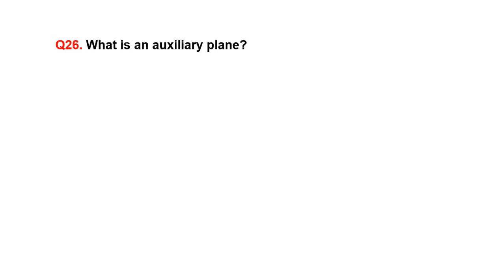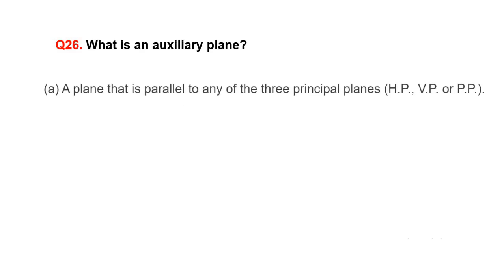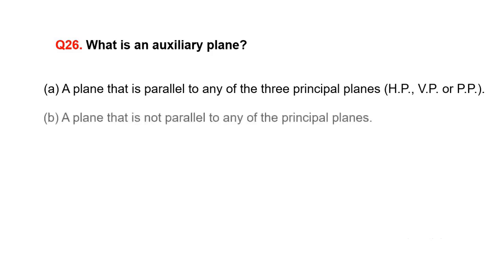What is an auxiliary plane? A. A plane that is parallel to any of the three principal planes, B. A plane that is not parallel to any of the principal planes, C. None of the above.